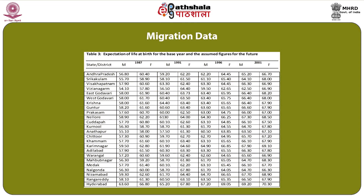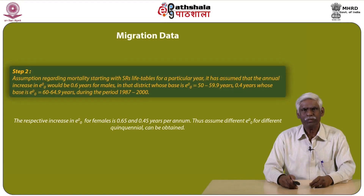The table clearly reveals the district-wise, gender-wise population over a period of time. In Step 2, regarding assumptions on mortality — starting with SRS life tables for a particular year — it has been assumed that the annual increase in E₀₀ (life expectancy at birth) would be 0.6 years for males in districts whose base E₀₀ is 50 to 59.9 years, during the period 1987 to 2000. The respective increase in E₀₀ for females is 0.65 and 0.45 years per annum. Thus, assumed E₀₀ values for different quinquennia can be obtained.